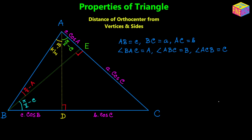Looking at length AE: that is the projection of AB onto AC, and since side AB is lowercase c, AE equals c·cos(A). Similarly, EC equals a·cos(C), which is the projection of side BC onto AC, where side BC is lowercase a.